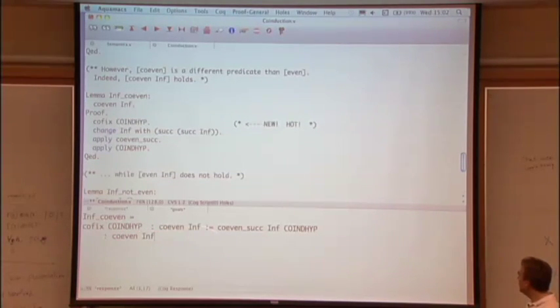So let me read that to you in camel syntax. Let rec co-inhip equals co-even suc, which is a constructor, applied to inf, which is an argument, and applied to co-inhip, which is a recursively defined thing, in co-inhip. So in camel, also, that would build you an infinite tree, well, with a cycle, of course. But it stands for an infinite tree. It's a graph that stands for an infinite tree.